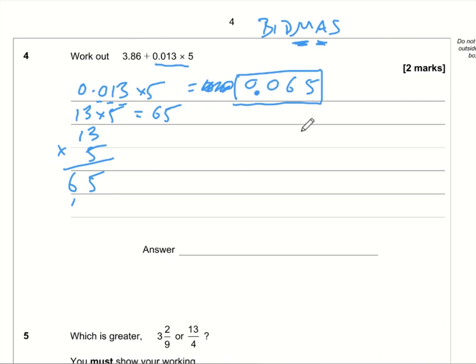So now all we need to do is add 3.86 and 0.065. You might want to put in a zero to make these decimals the same length. Put a decimal point in the answer box in line. 0 plus 5 is 5. 6 plus 6 is 12. 2 carry 1. 8 plus 0 plus 1 is 9. 3 plus 0 is 3. So the answer is 3.925.